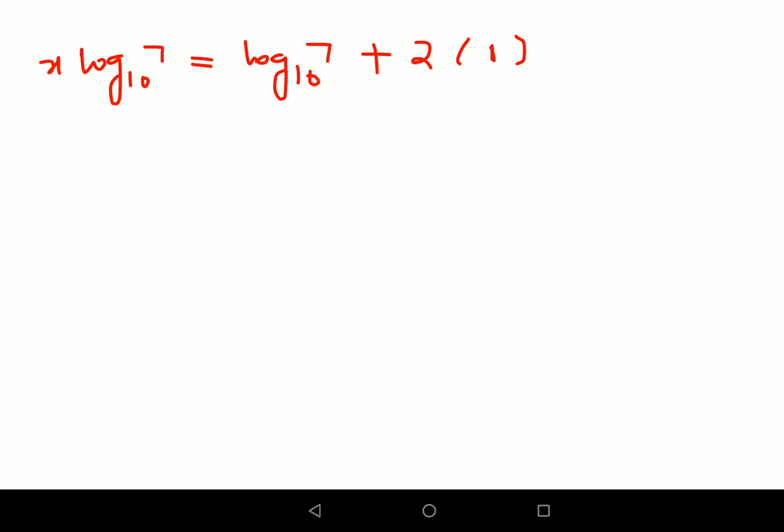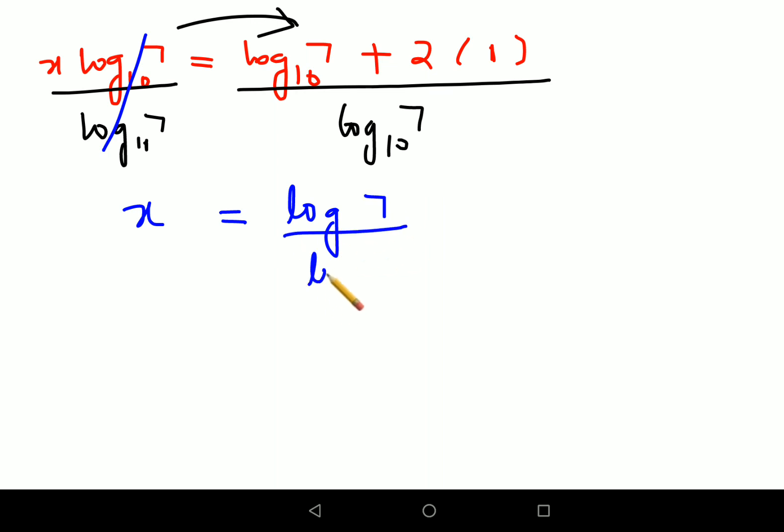Now in order to find the value of x, always in mathematics whenever you want to find the value of a variable, we try to shift all the numbers on one side of the equal to. So we will divide both sides by log of 7 to the base 10. Things are canceling here, and in your LHS you're just left with the value of x. In your RHS you are left with log of 7 plus 2 upon log 7.